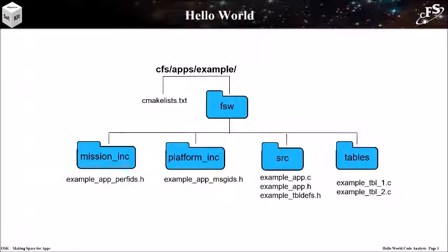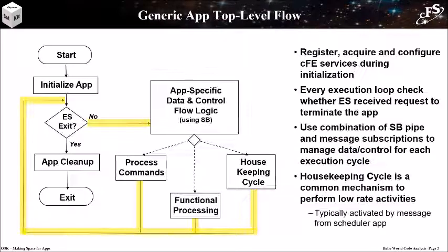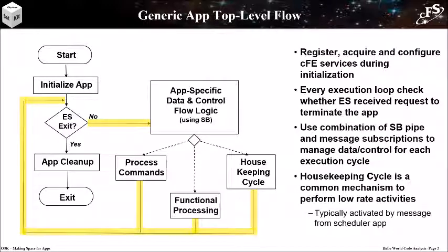Here we see the generic app flowchart that was introduced in the Core Flight Executive service tutorials. The example app follows the same structure. When the app is created it executes an initialization function that registers and configures the cFE services. Next it enters an infinite loop that is only exited if executive services has received the request to terminate the app, represented by the diamond with the ES exit.